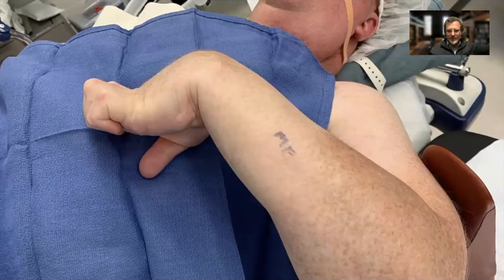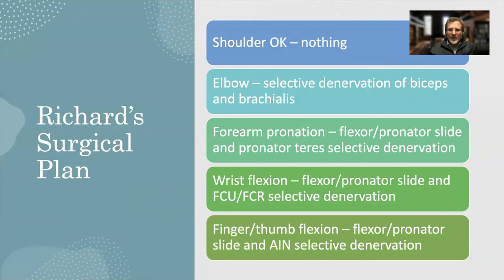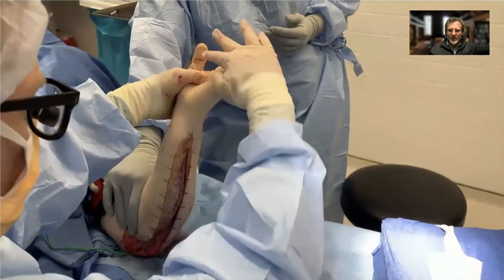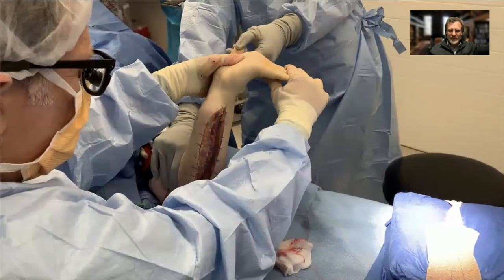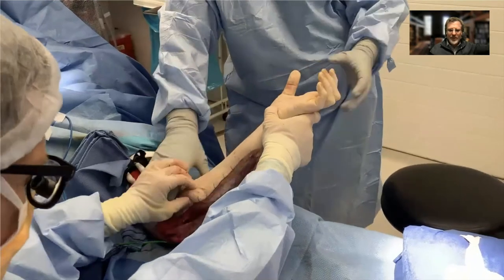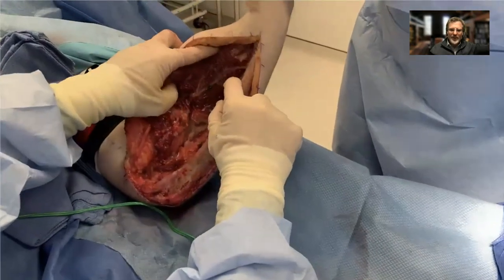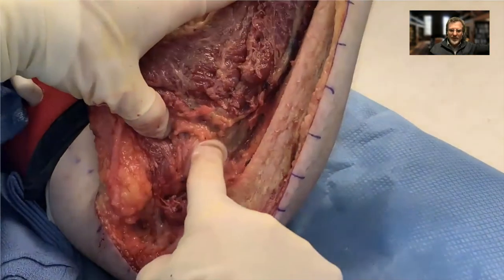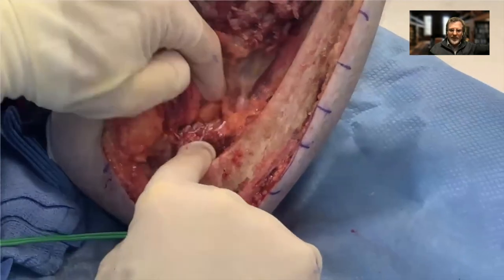So let's go back to Richard. His surgical plan according to the new paradigm: for the elbow, selective de-innervation of the biceps and brachialis; for forearm pronation, a flexor pronator slide and pronator teres selective de-innervation; for wrist flexion, flexor pronator slide and FCU-FCR selective de-innervation; for finger and thumb flexion, flexor pronator slide and AIN selective de-innervation — which is somewhat controversial. This is what his arm looks like after a flexor pronator slide — not a simple release of the flexor origin from the medial epicondyle, but a full release of the entire flexor compartment. You can see the median nerve and the ulnar nerve, and it's fairly easy to do the de-innervation.